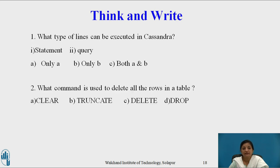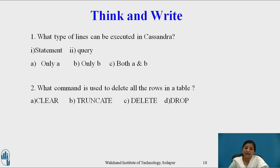Now let's pause and think: what types of statements can be executed in Cassandra? There are two types: one is commands such as CAPTURE, DESCRIBE, COLOR, and so on; the second is queries — that is, CREATE, READ, UPDATE and DELETE operations. The answer is both can be executed, because shell commands as well as CQL queries can both be executed on the Cassandra shell, as we have seen.